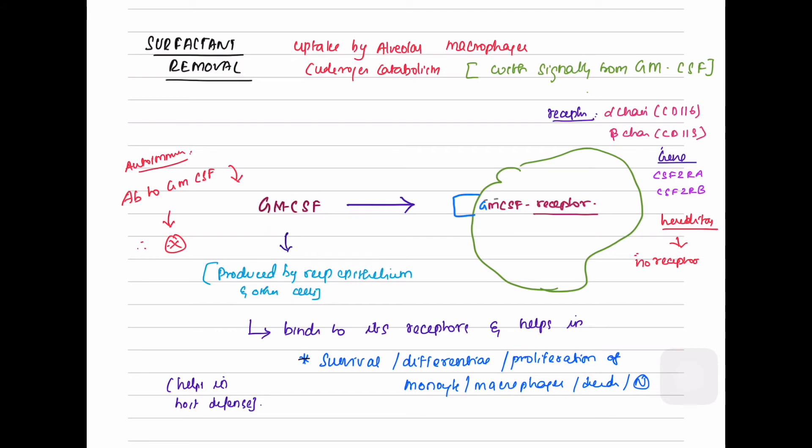They act on GM-CSF receptor present on the alveolar macrophages. The binding of granulocyte-monocyte colony stimulating factor to the GM-CSF receptor helps in survival, differentiation, and proliferation of monocytes and macrophages. Once the receptor gets activated, the alveolar macrophages uptake surfactant for catabolism. The genes encoding GM-CSF receptor are CSF2RA and CSF2RB. Any genetic mutation affecting these receptors results in abnormal surfactant accumulation because of decreased uptake of the surfactant.